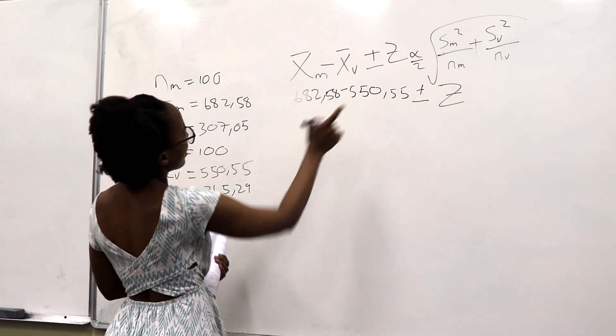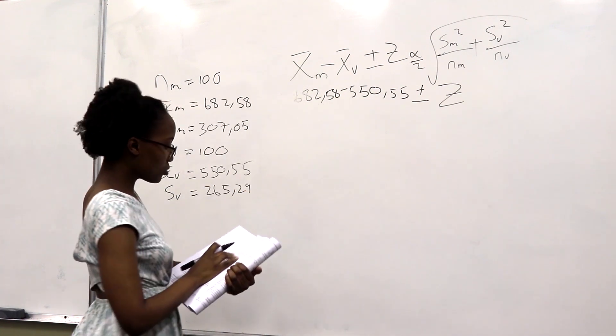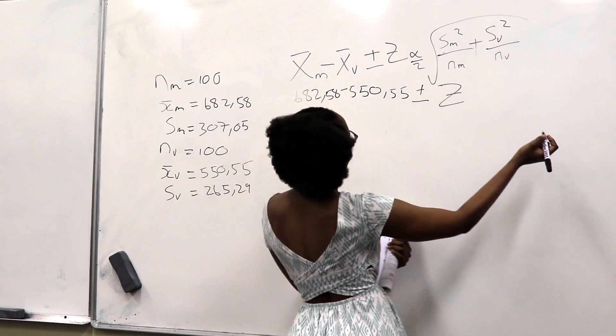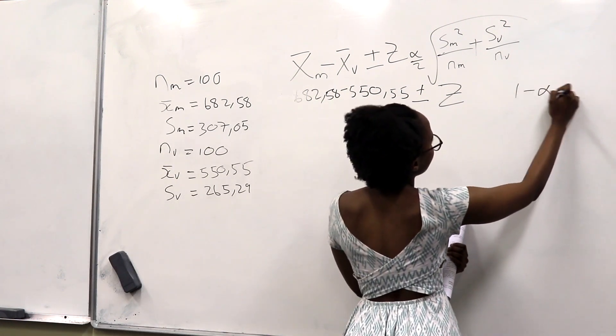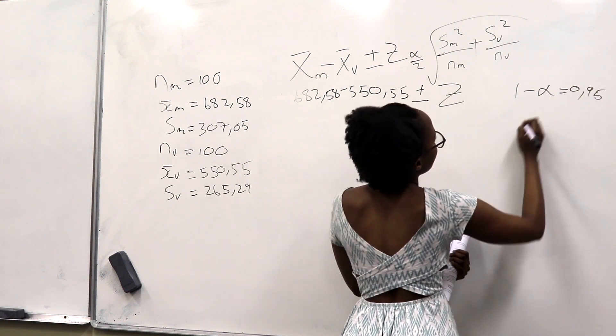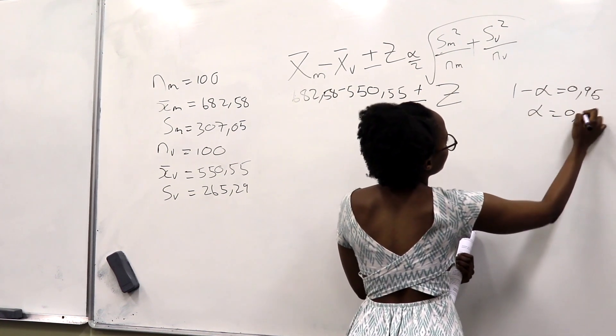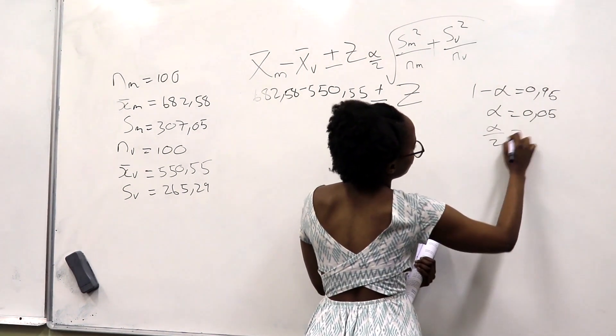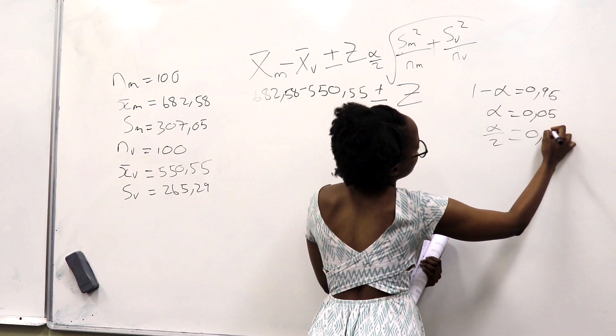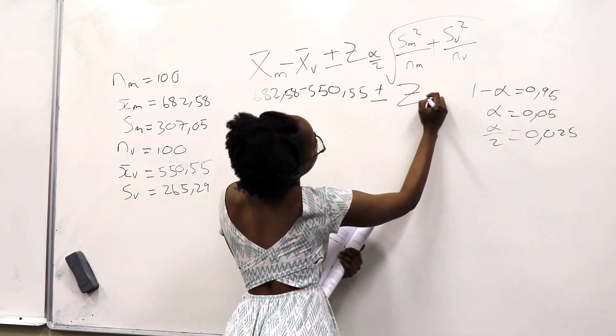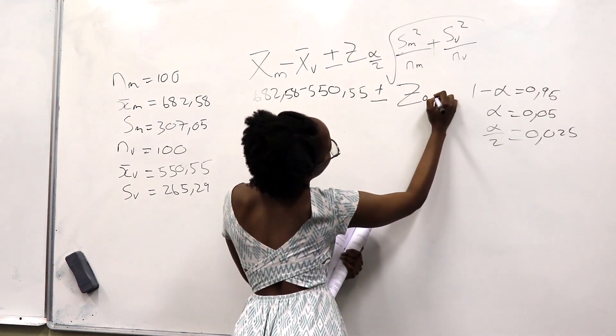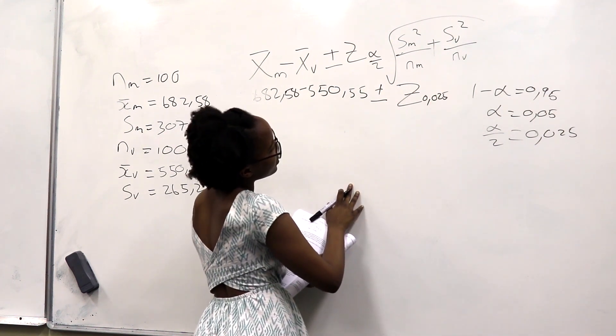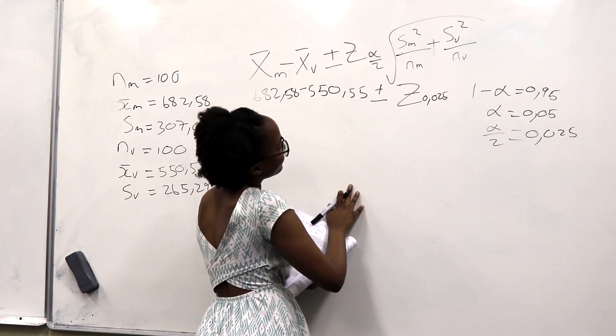To calculate our alpha over 2, we are told that our confidence interval is 95. Therefore, we can say that 1 minus alpha equals to 0.95. Therefore, our alpha will be 0.05. And then, we will divide that by 2, giving us 0.025.